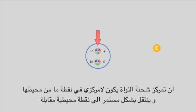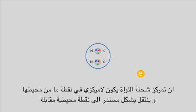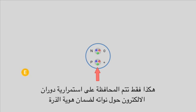The positive charge is constantly jumping back and forth between two opposite and symmetric sides near the circumference of the nucleus. This is the only way in which the atom's identity can be conserved by the continuous spinning of the electron around its nucleus.